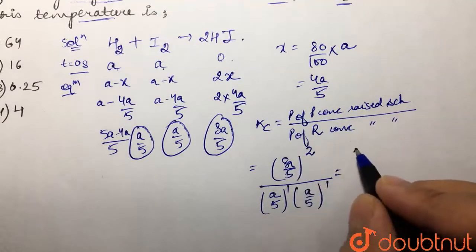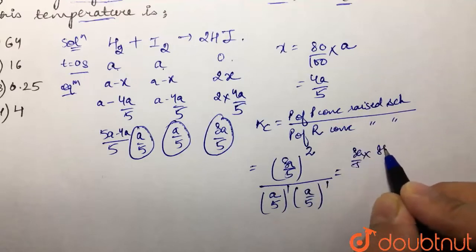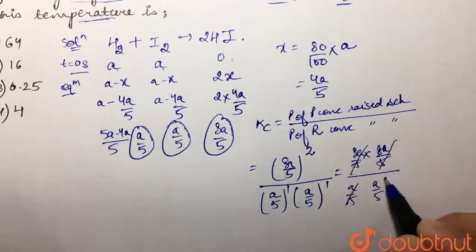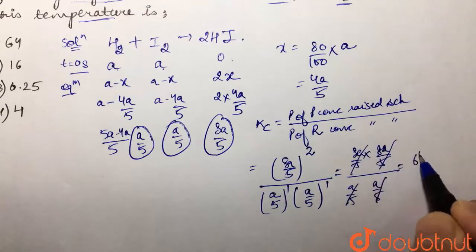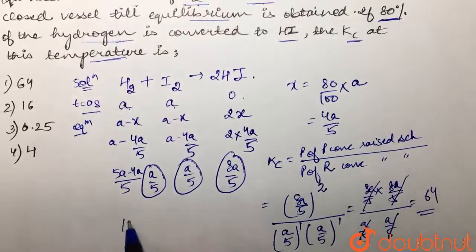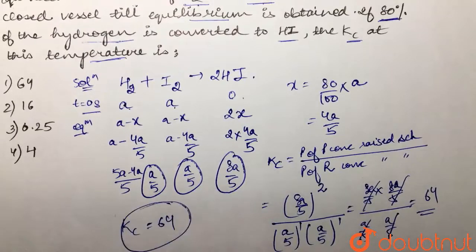If we solve it, we have 8a/5 times 8a/5 divided by a/5 and a/5. So a/5, a/5 gets cancelled. We have 8 times 8, which is 64. Our answer comes out to be 64. The Kc value is coming out to be 64.